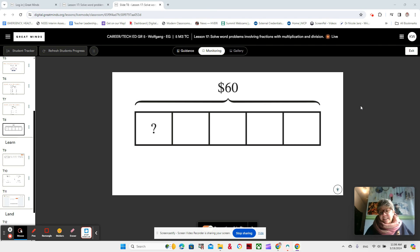Hey guys, here we are in Lesson 17 of Video 1, Lesson 17, Module 3. As you can see on the screen, we have a tape diagram. It's labeled $60 and it has five sections.